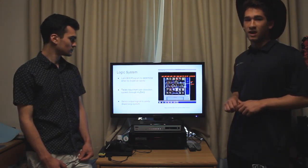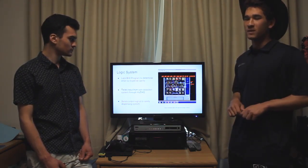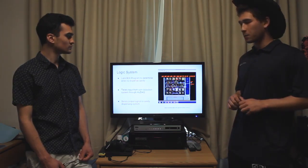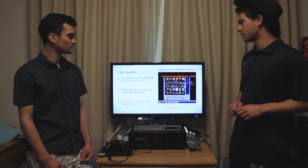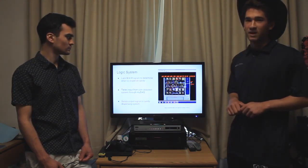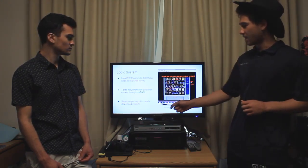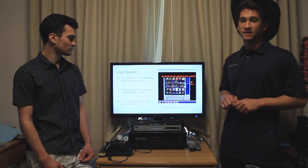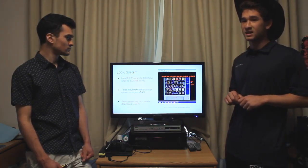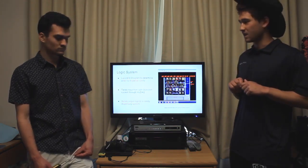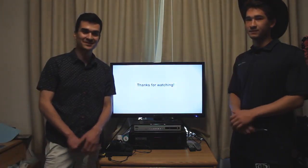The logic system takes input from the coin detection system. When the coin detection system signals that a coin has been inserted, it adds one to the credit count. When there's enough money in the machine, the logic system tells the candy dispensing system to start dispensing. It runs the motor for ten seconds to dispense candy, then stops and resets all the counts. And that's our project — thanks for your time.